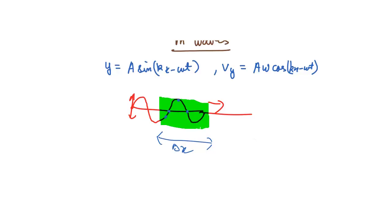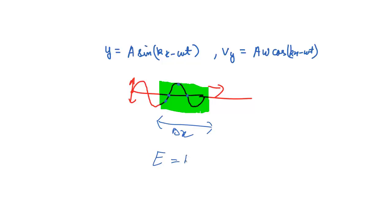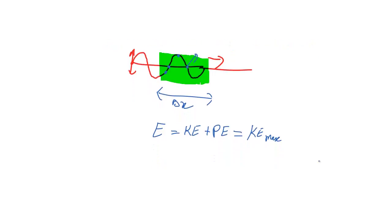Any point on the string has kinetic energy plus potential energy, and the total energy does not change with time. The particle at the crest has only potential energy — it is momentarily at rest. The particle at the mean position has only kinetic energy since the thread is not stretched there. All particles within the shaded δx region have the same total energy.